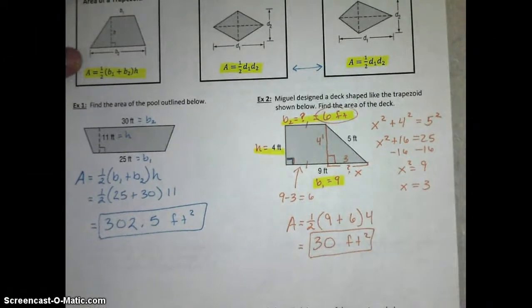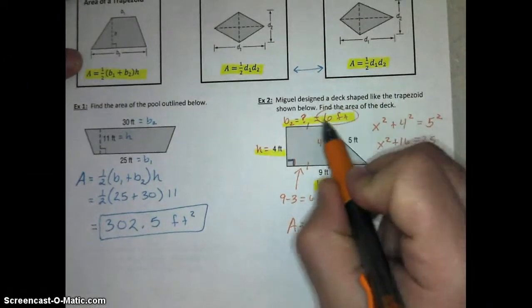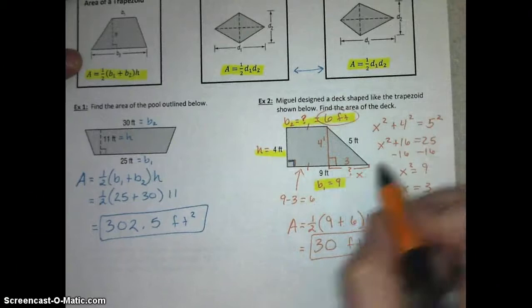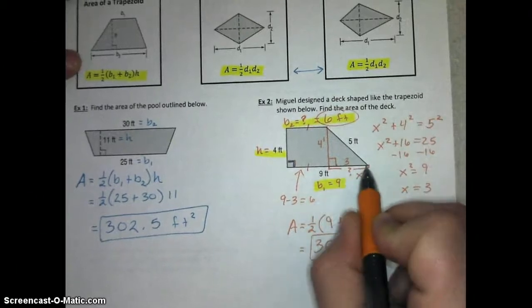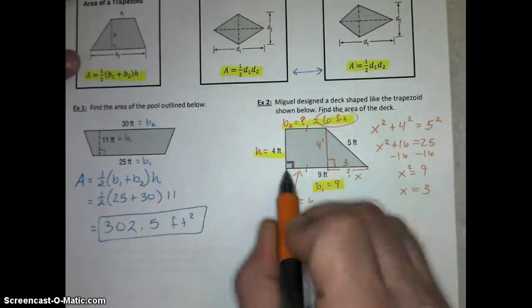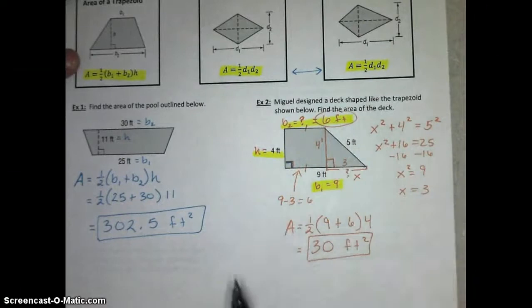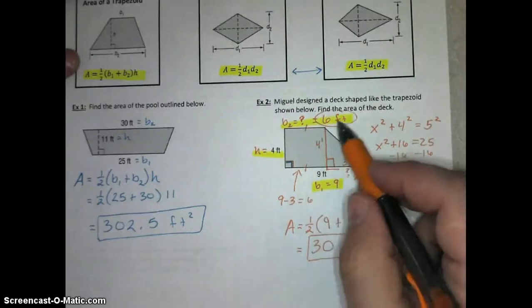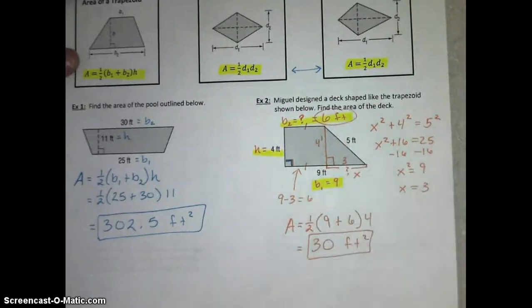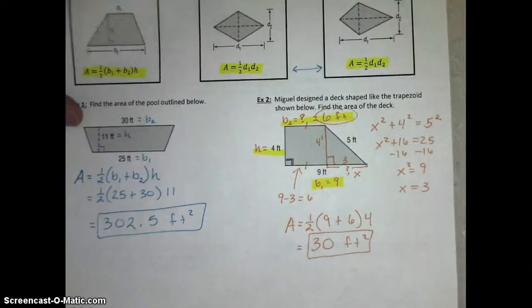30 square feet. So, quickly review, just in case you're a little lost. The first thing we did was find our second base by using our Pythagorean theorem to find this unknown part. And we just subtracted that from the full 9 feet to find that missing piece. So, that's 6 feet, which is base 2. I add the bases, multiply by the height, and divide by 2, and we get 30 square feet.